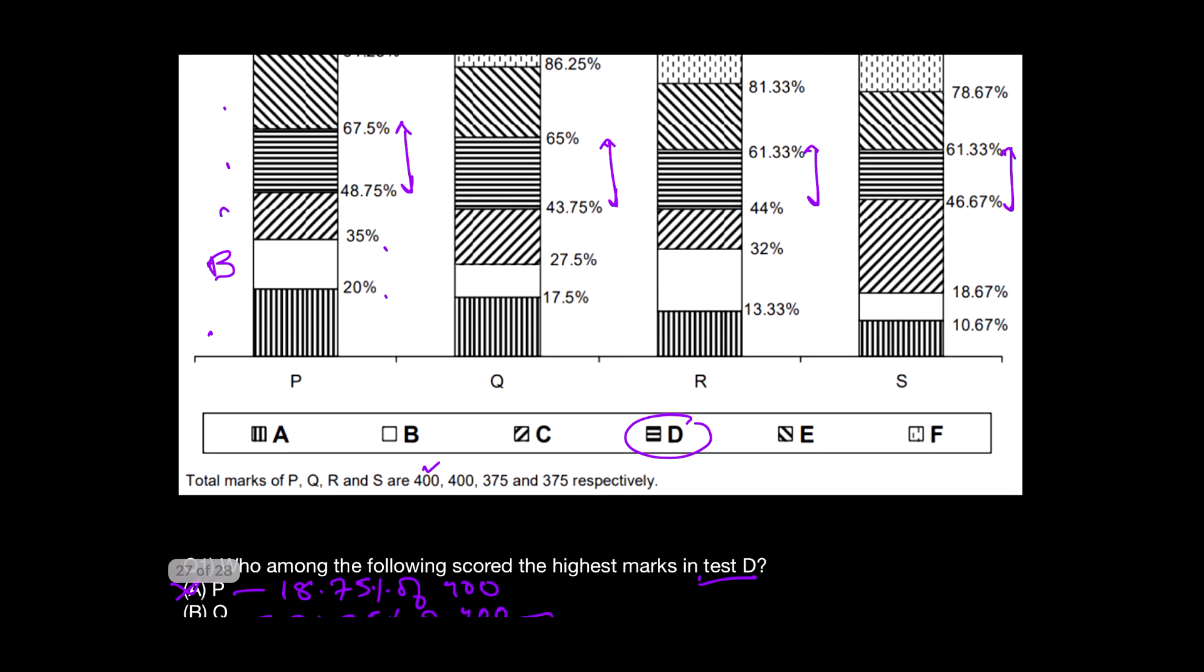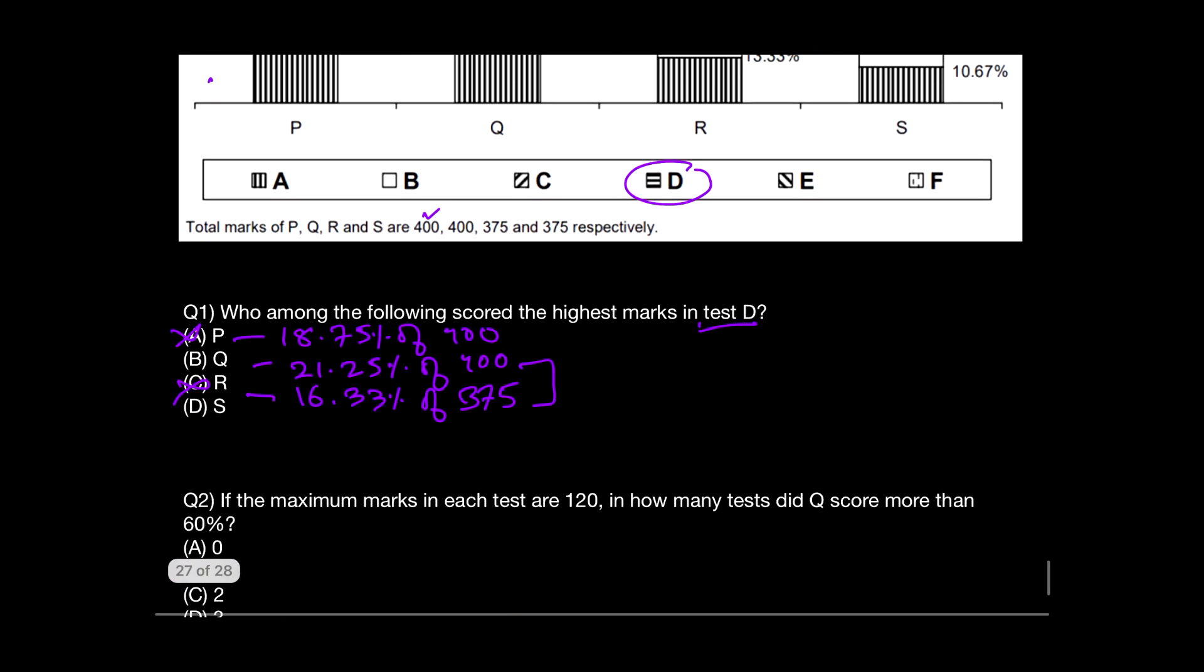Finally we'll check S. S is having a difference of 61.33 minus 46.67. If I subtract this, I'll get 14.66%. I'll compare 14.66% of 375 with 21.25%, and it's very clear that since the percentage and the number both are less than Q, D is also gone. Without any calculation, we come across the answer which is 21.25% of 400, that's equivalent to somewhere around 85, which is the highest marks in test D scored by Q. So that will be my answer.